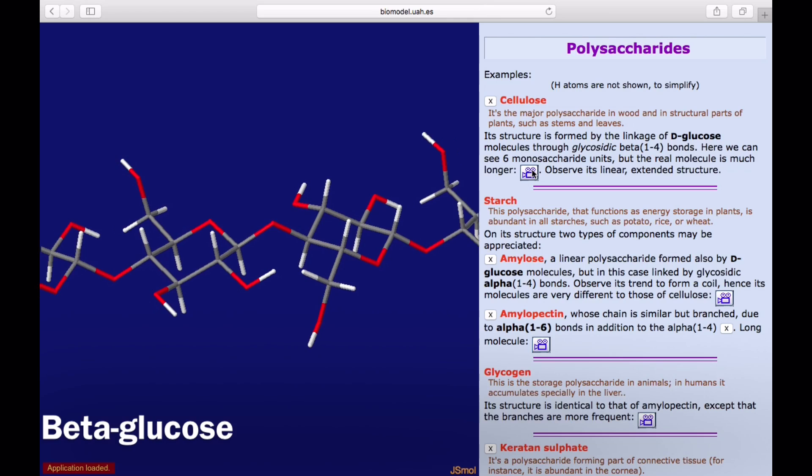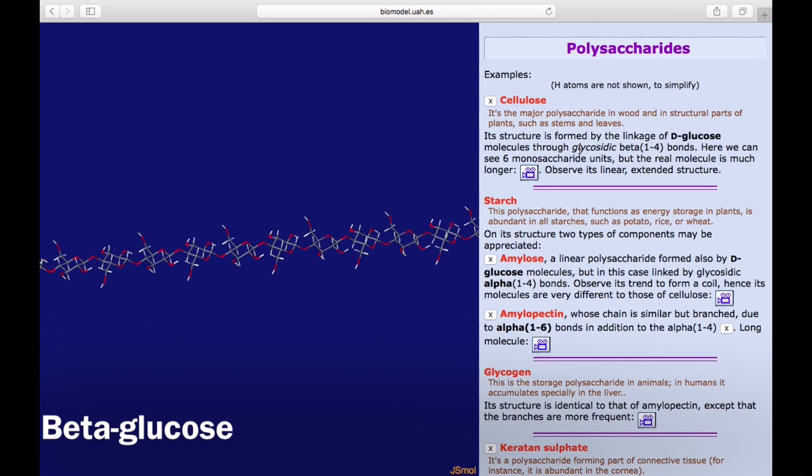Let's begin with cellulose. When you click on the button for cellulose in BioModel 3, you can observe its linear extended structure.